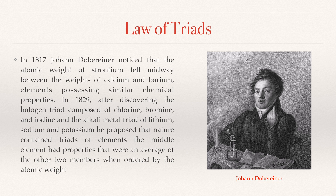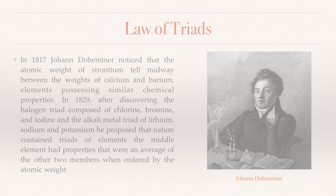In 1829, after discovering the halogen triad composed of chlorine, bromine, and iodine, and the alkali metal triad of lithium, sodium, and potassium, he proposed that nature contained triads of elements. The middle element had properties that were an average of the other two members when ordered by atomic weight.